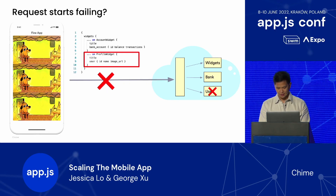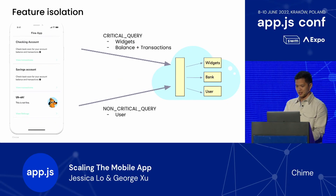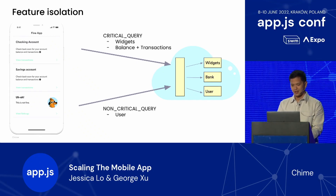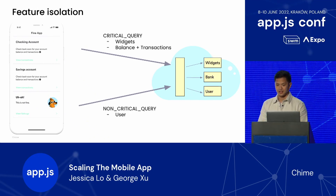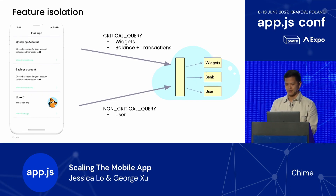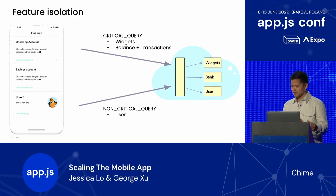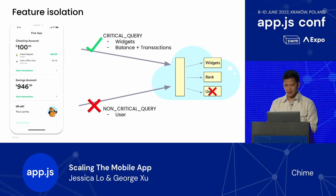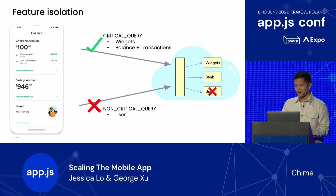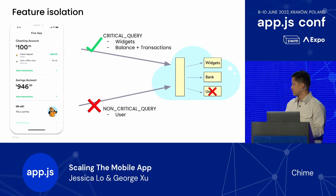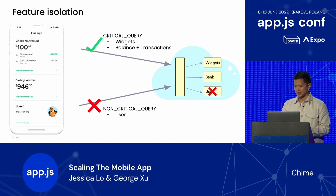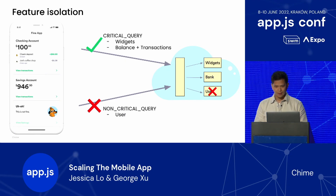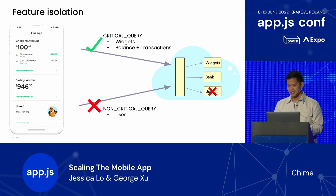Today we'll talk more about feature isolation. How we implemented feature isolation is by splitting our one single query into two separate ones. One query contains critical member information such as balance and transactions, while the other contains non-critical information such as user info. Our most critical features are now isolated from failures that may occur with the less critical features. As you can see in the UI, even if the user service is failing, balances and transactions are still able to return successfully. Our app can continue to display the most critical information through the account widgets, even while the profile widget is still in an error state. This is a much better experience than displaying an error for everything. We found that splitting queries is the simplest and most resilient approach.